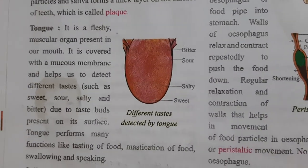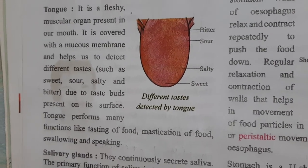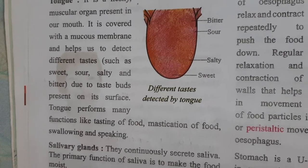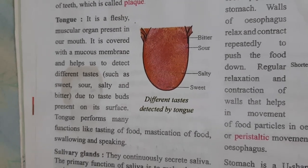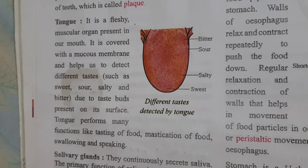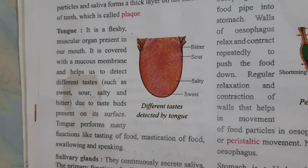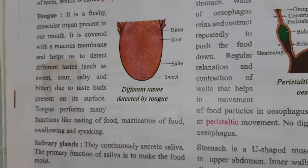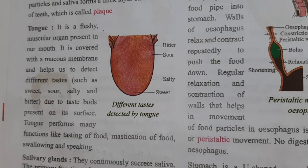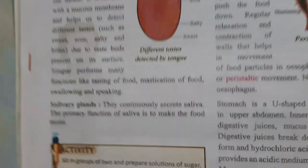Another organ present in the mouth is the tongue. It is a fleshy muscular organ covered with a mucus membrane that helps us detect different tastes. The tongue has taste buds which detect different tastes such as sweet, sour, salty, and bitter.